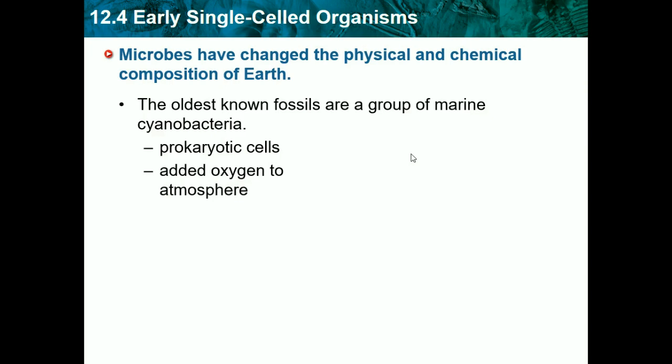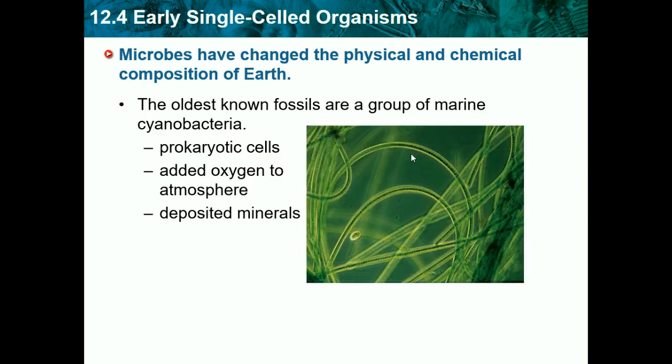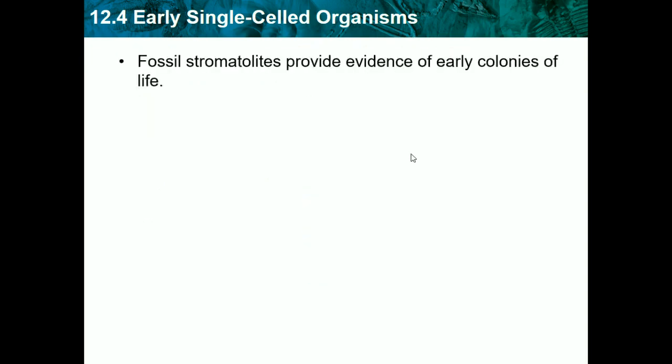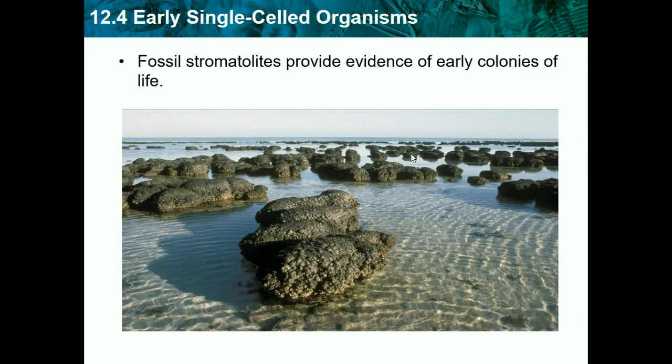The cyanobacteria added oxygen to the atmosphere, making it more livable, and they deposited minerals — basically they started life and made it easier for other life to form. Fossil stromatolites provided evidence of early colonies of life. These are basically just sediment buildup that eventually formed rock-like fossils.